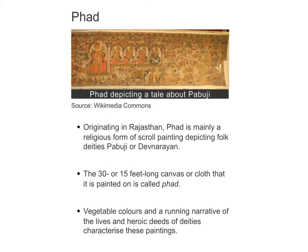The third painting is Phad painting, originated in Rajasthan. It is basically a religious form of scroll painting depicting the folk deities Pabuji and Dev Narayan, though there are also stories of heroic deeds like Maharana Pratap and other great Rajput kings. It is essentially a narration — very lively. It is painted on a 30 to 15 feet long canvas or cloth, and this painted canvas is called a Phad.